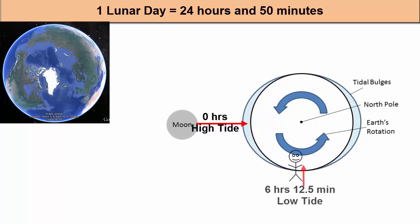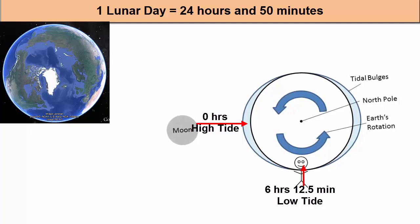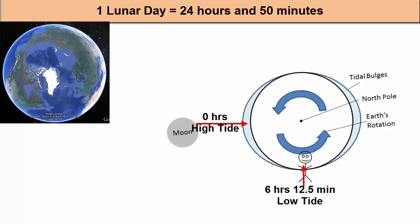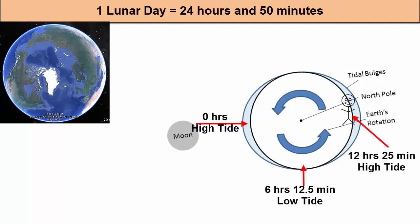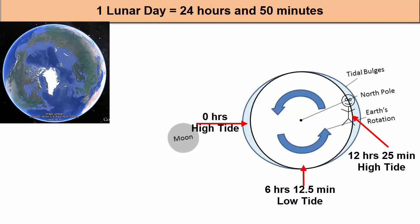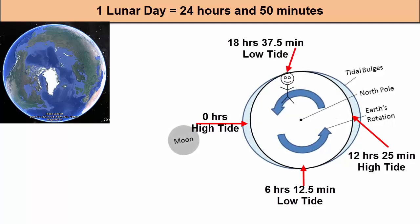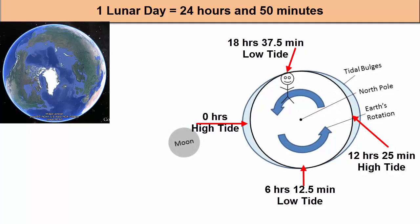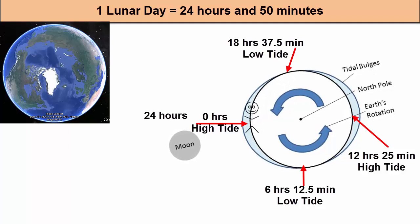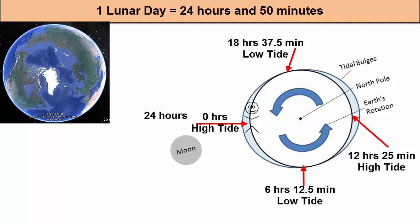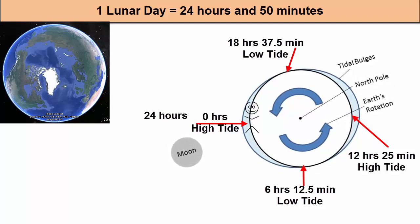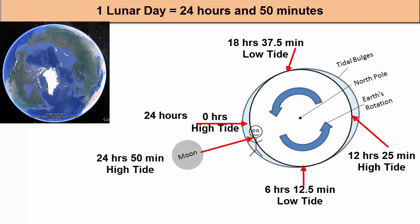Six hours and 12 and a half minutes later, that figure has rotated out of the high tide. Ebb current has removed water from the land and low tide has arrived. Then, flood current starts as the figure heads into another high tide at 12 hours and 25 minutes. 18 hours and 37.5 minutes later, the figure has left the high tide and is experiencing low tide again. 24 hours later, the figure is back where it started relative to the Sun, but the Moon has been moving during Earth's rotation. The Moon has moved one twenty-ninth of its full orbit. The bulges have moved with it, so the figure needs to rotate another 50 minutes to meet back up with the bulge.